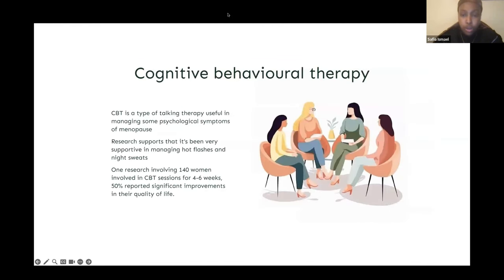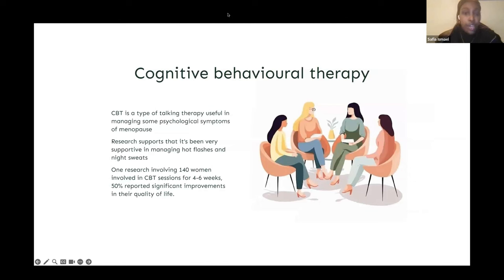Cognitive behavioral therapy (CBT) is an interesting intervention for menopause. It is a type of talking therapy helpful in managing psychological symptoms such as stress, anxiety, and depression associated with perimenopause and menopause. Interestingly, studies also support its effectiveness in managing vasomotor symptoms — hot flashes and night sweats. One study found that 140 women who participated in group CBT sessions for 46 weeks — totaling around eight hours — reported a significant improvement in quality of life as well as reductions to the previously described symptoms.